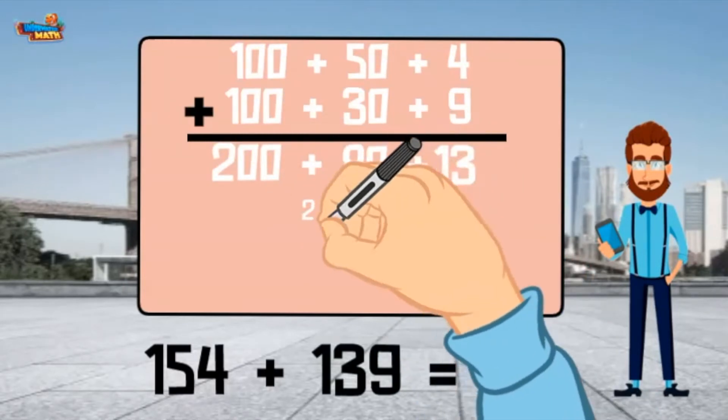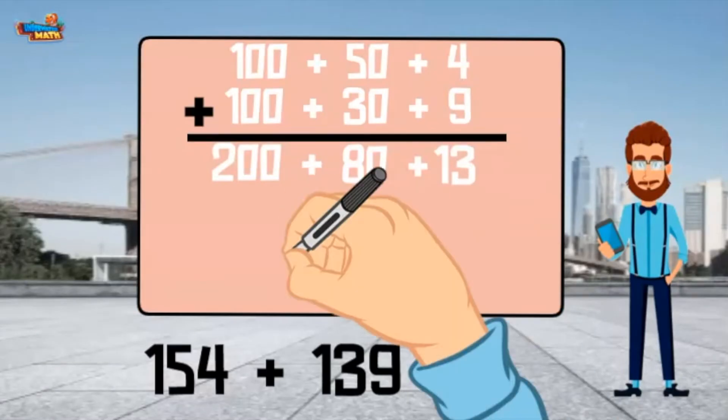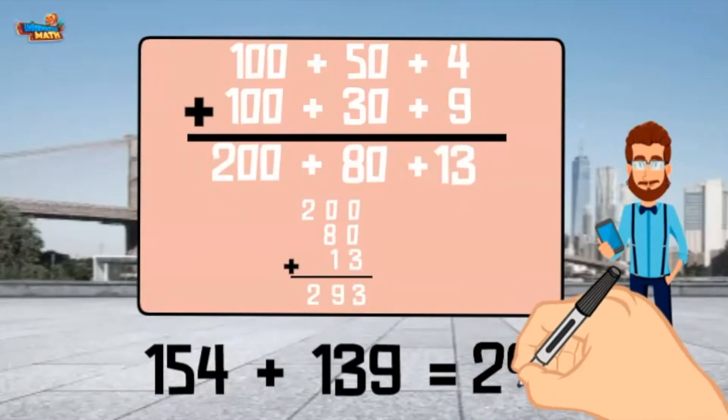Finally, I combine the values in the bottom row. 154 plus 139 equals 293.